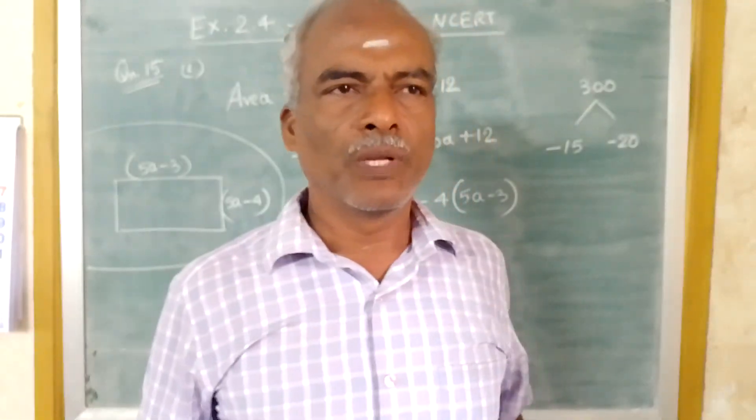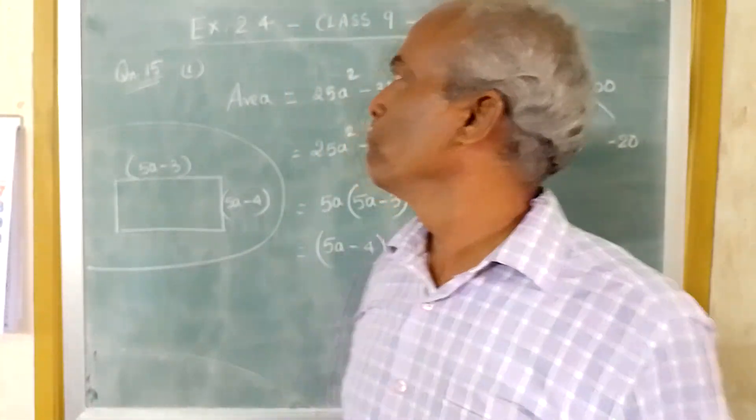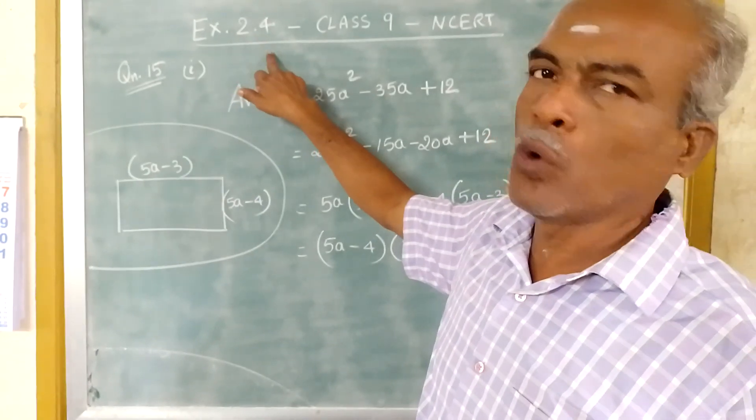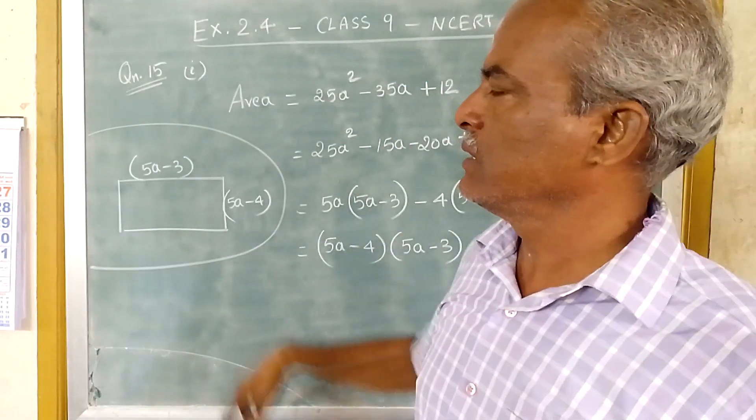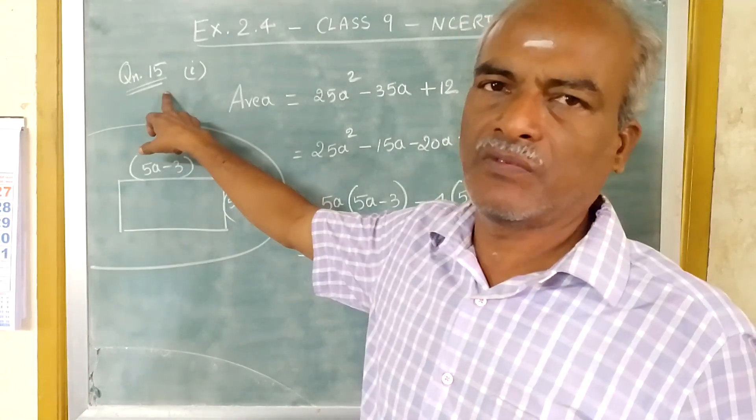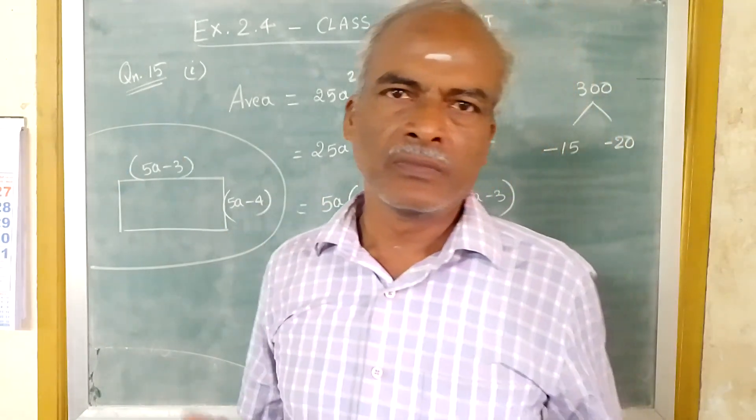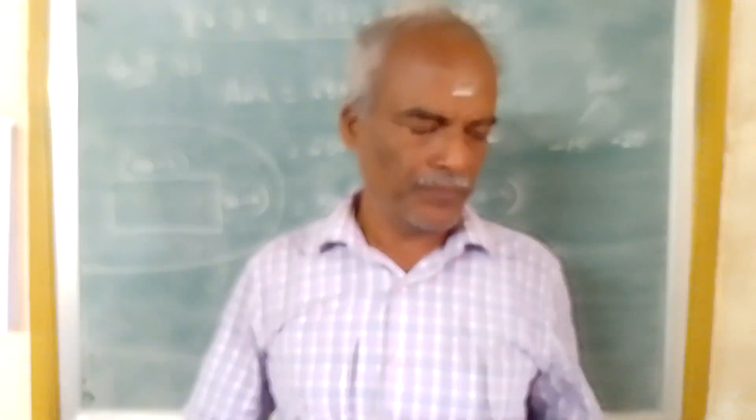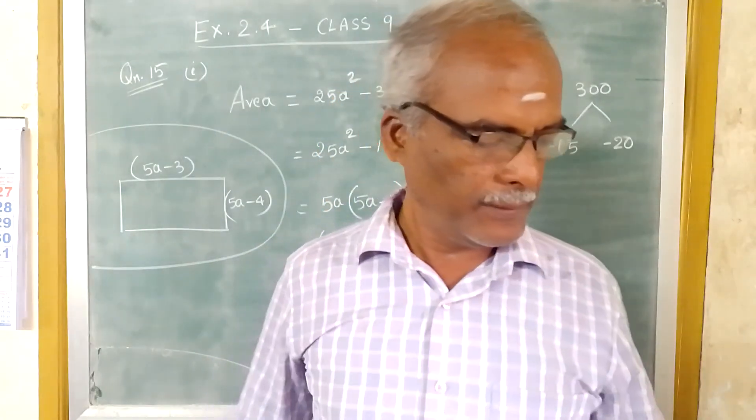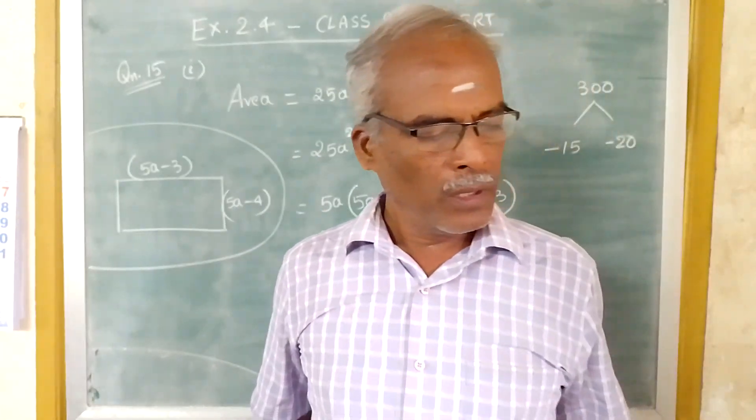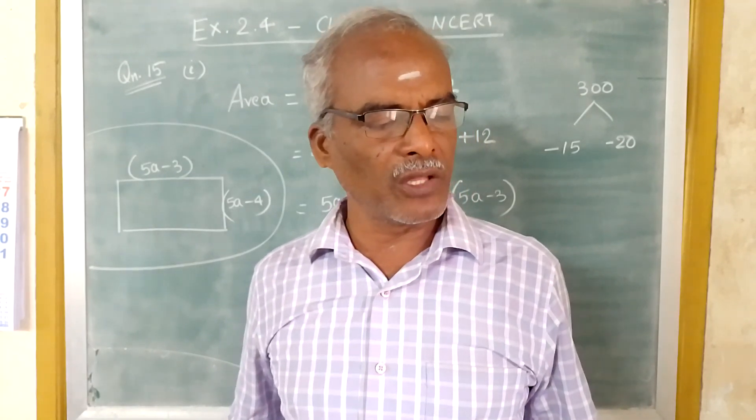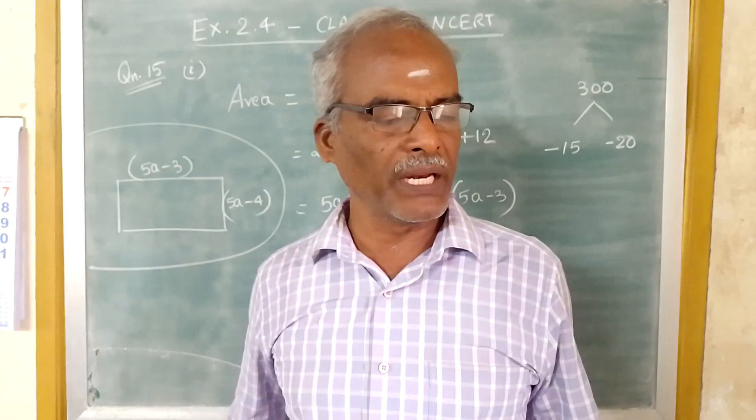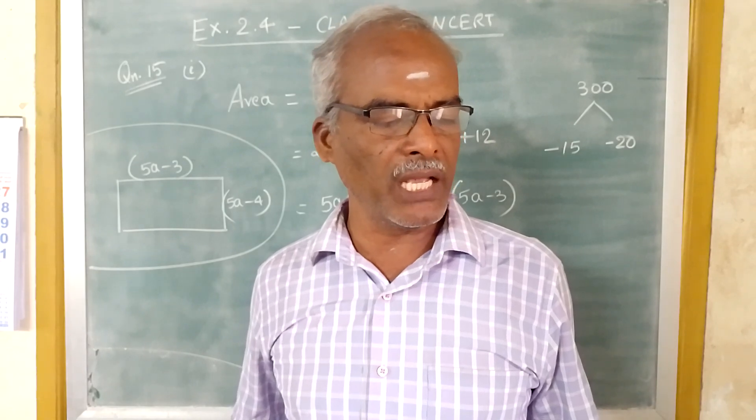Good morning viewers, today we are going to see exercise 2.4, class 9 NCERT syllabus. In that, question 15 first problem, then we will see second problem. So let me read out the question. Give possible expressions for the length and breadth of each of the following rectangles in which their areas are given.